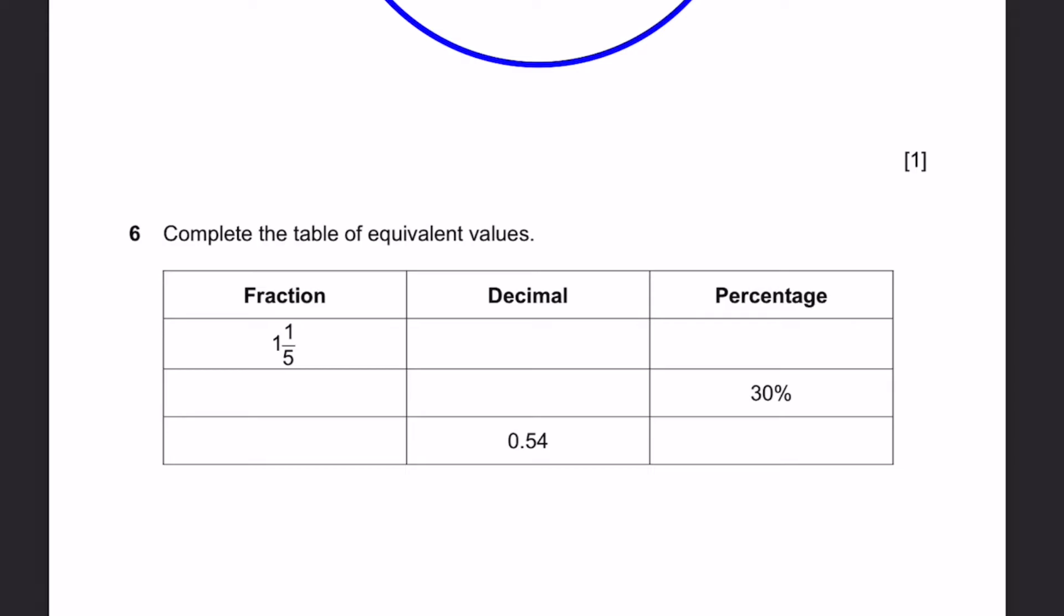Question 6. Complete the table of equivalent values. Fraction: 1 and 1 by 5. Decimal: we just convert 1 by 5 to a decimal, that's 0.2, and now we add 1, which is the whole number part, so 1.2. Percentage: just multiply the decimal by 100, so that's 120%. Now, 30% in percentage will become 0.3 as a decimal because we divide by 100 to go from percentage to decimal. Now, a fraction we can find by noticing that this 3 is in the tenths place, which is right after the decimal point. And that means it's 3 tenths, 3 by 10.